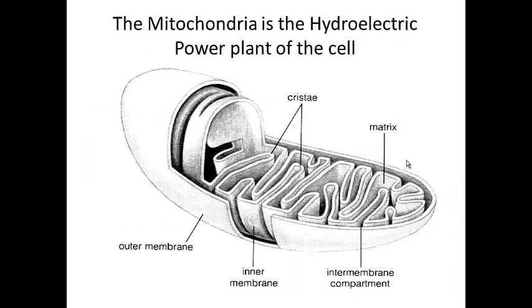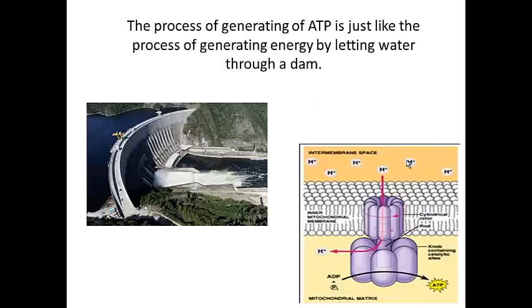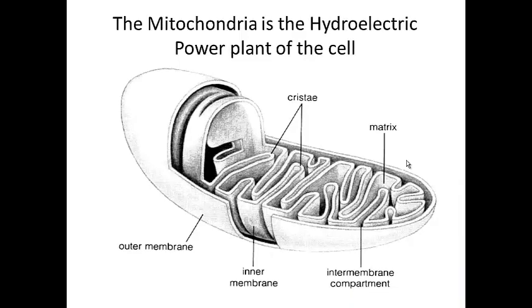The last thing I want to talk about is the mitochondria. So the mitochondria is the hydroelectric power plant of the cell. This is where this is taking place. This is where the dam is. This is where the hydroelectric power is being created. And it is a specialized organelle within the cell that produces ATP.